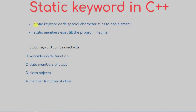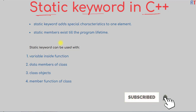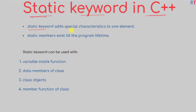In this video we're going to talk about the static keyword in C++ programming. Static is a keyword in C++ that we can use with elements, and it adds some special characteristics to them. Static members can exist till the program lifetime, so once we create one static member, that member has scope during the entire execution of the program.